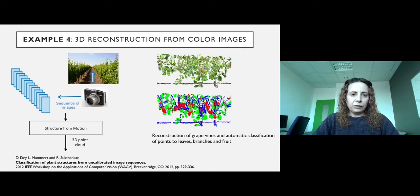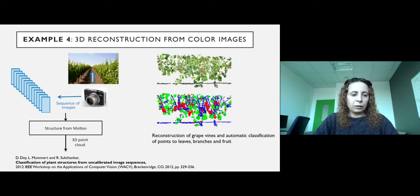We have another example of 3D reconstruction from color images. Here, a RGB camera is moved along the rows of grapevines. Using the sequence of images and the structure from motion method, a 3D point cloud of the scene is obtained. These point clouds are then processed to automatically classify the leaves, branches, and fruits of the plant.